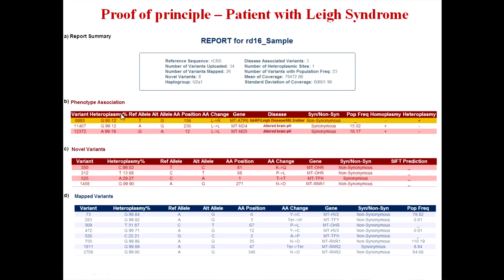The second section is the list of variations with phenotypic association, which details variant position, reference allele, alternate allele, corresponding amino acid change, the gene within which the variant lies, the disease caused by the variation, whether the variation is synonymous or non-synonymous, the corresponding population frequency, and the heteroplasmic frequency. The third section is the list of novel variations not reported in existing databases, while variations reported in databases are listed under the section of mapped variations.